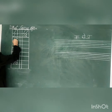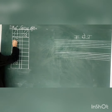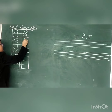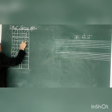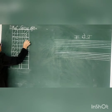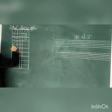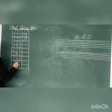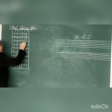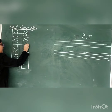Next: 7, 5, 75. 7, 5, 75 after: 7, 6, 76. Next: 7, 7, 77. 7, 7, 77 after: 7, 8, 78.